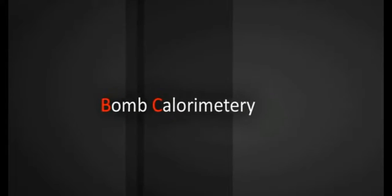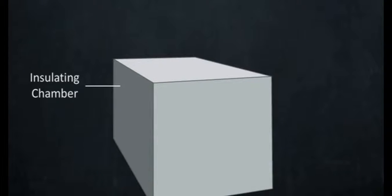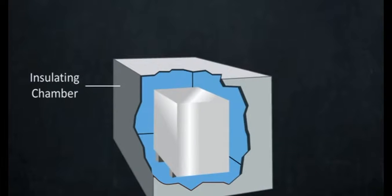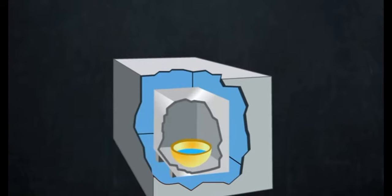Calorimetry. A bomb calorimeter, as shown in the frame, is mainly used for determining the heat of combustion of fuels, such as coal, kerosene, oil, petrol, etc.